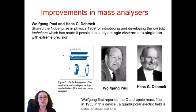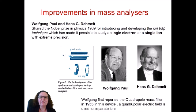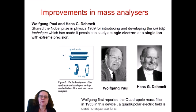Paul and Dehmelt, who shared a Nobel Prize in the late 80s, worked extensively in mass spectrometry and developed a technique called the ion trap technique, which makes it possible to study a single ion with incredibly high precision. Paul also developed the first quadrupole mass filter in the mid-50s — a quadrupole ion trap system that can be used to separate ions much more effectively.